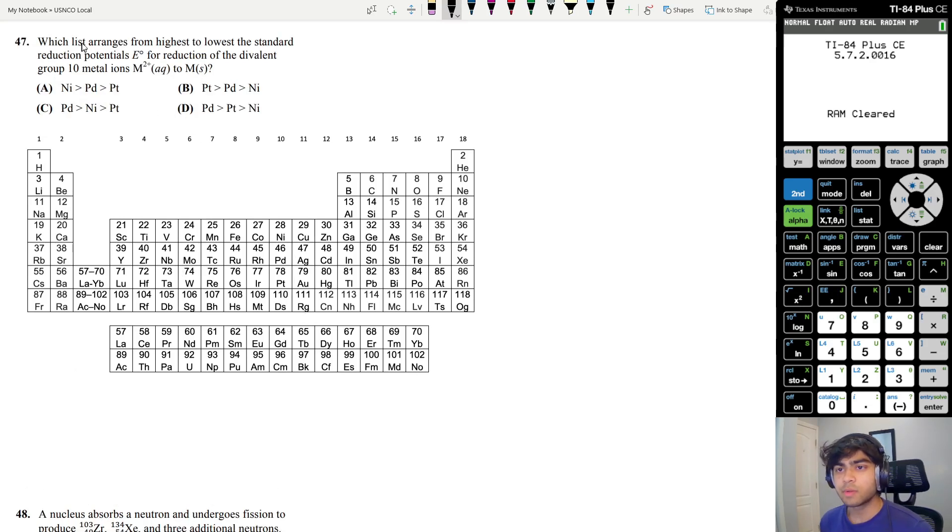Let's move on to question 47. Which list arranges from highest to lowest the standard reduction potential E0 for reduction of the divalent group 10 metal ions M2+ to M? The standard reduction potential refers to how easily something is going to be reduced, how easily it's able to pick up new electrons.